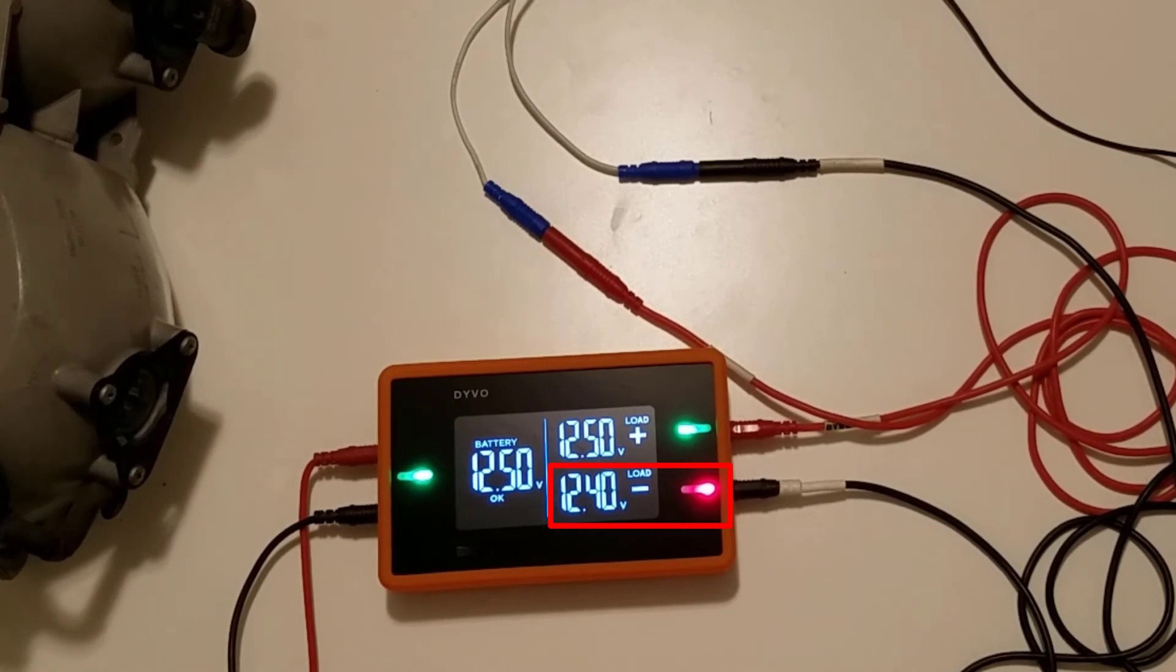Now remember, our ground side should have very close to zero volts on it. It's the ground or the negative side, so it shouldn't have any voltage. Because we have 12.40 volts, that means that we don't have a good ground connection.